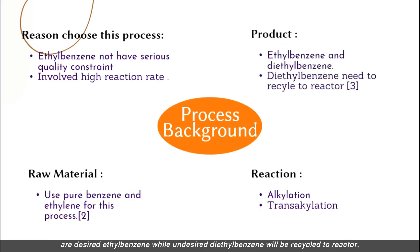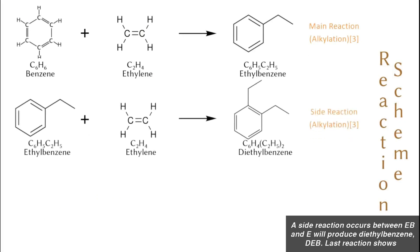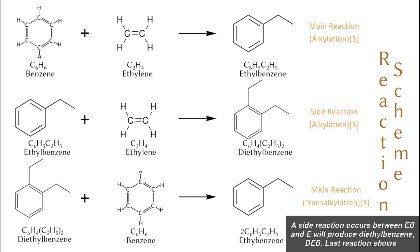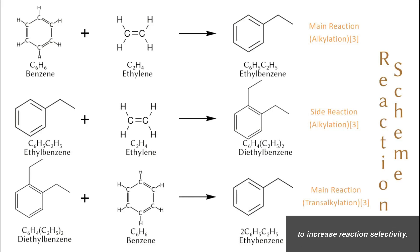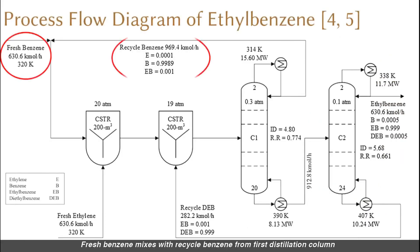The desired product is ethyl benzene (EB), while undesired diethyl benzene (DEB) will be recycled to the reactor. For the reaction scheme: benzene (B) and ethylene (E) are added to produce ethyl benzene (EB). A side reaction between EB and E produces diethyl benzene (DEB). The last reaction shows that undesired DEB reacts with B to form more EB, hence benzene needs to be in excess to increase reaction selectivity.